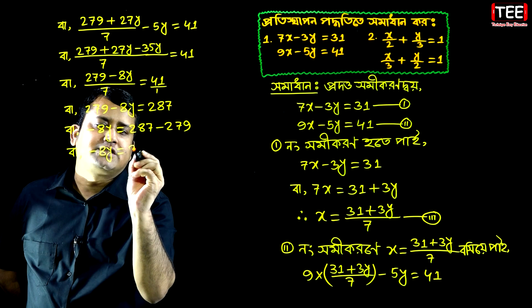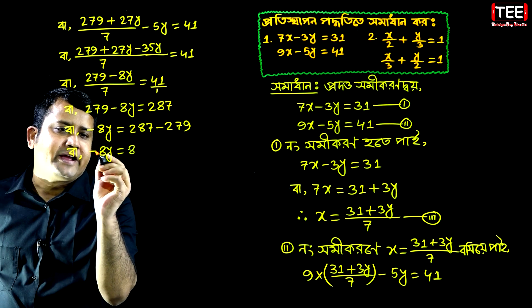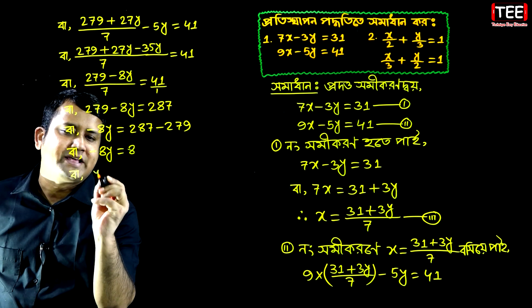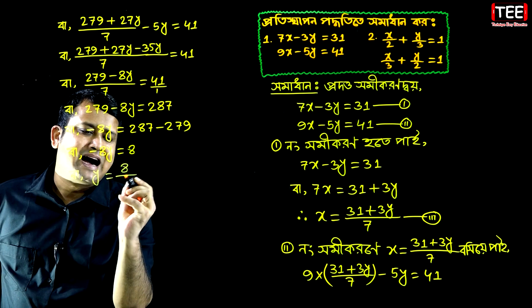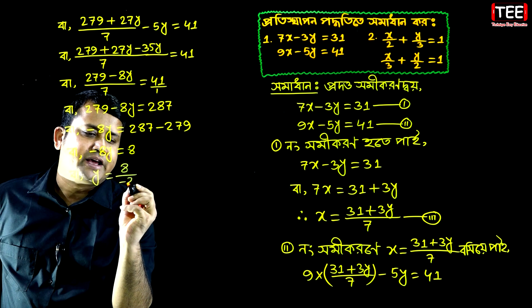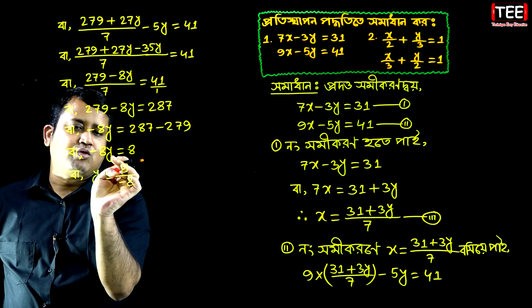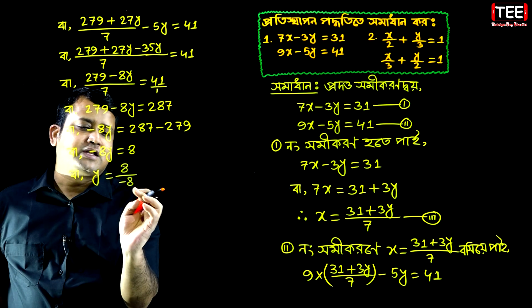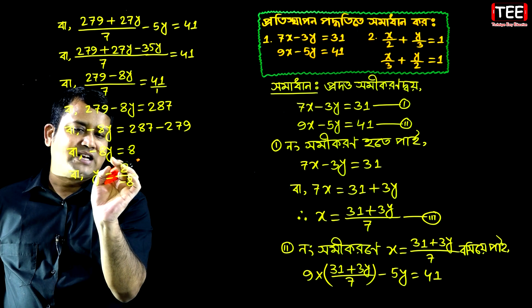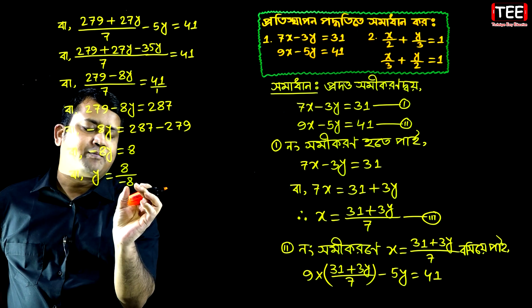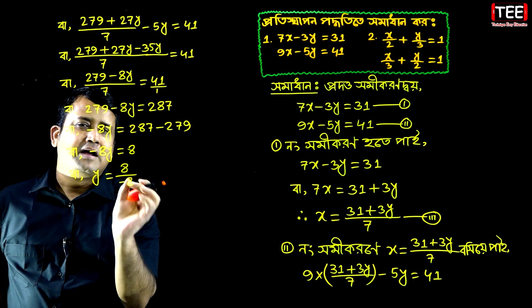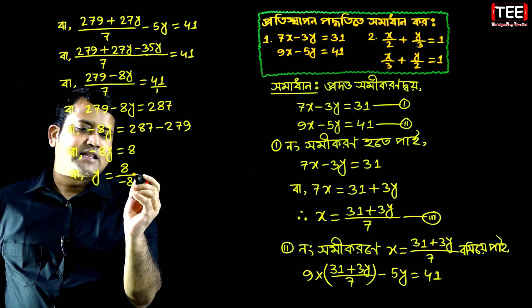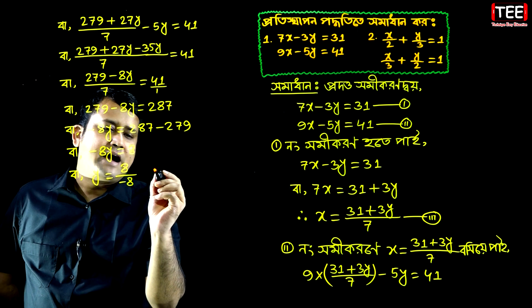287 minus 279, so plus 8, minus 8y is equal to... 8 minus 8, so minus 8, minus 8, minus 8 is equal to... minus 8.